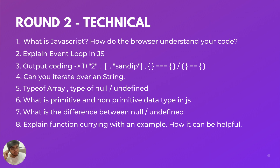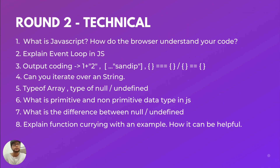The eighth question was about currying functions with an example. Generally in interviews they ask what is a currying function — give an example. But this interviewer also asked how it can be helpful in a real-life coding situation, where you're building an application and actually need a currying function. I had hands-on experience with currying and closures from my current company's codebase — I had used it before without knowing it was called currying. If you don't have hands-on experience, I'd recommend seeing some examples and understanding how currying relates to real-life scenarios.